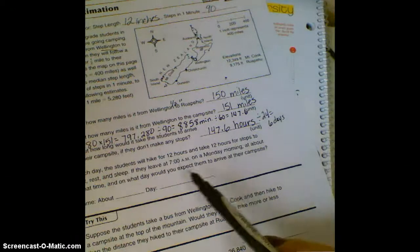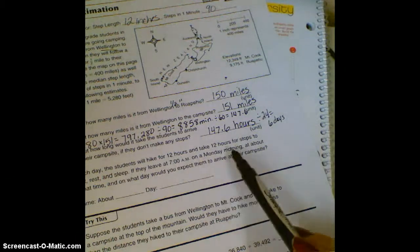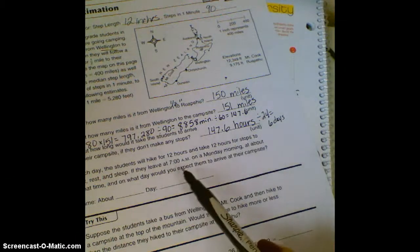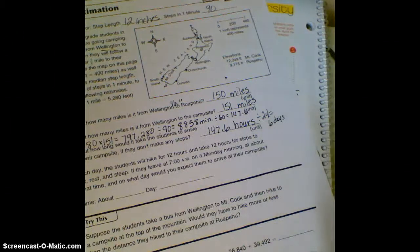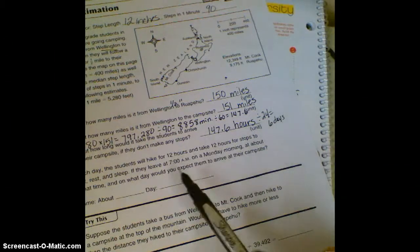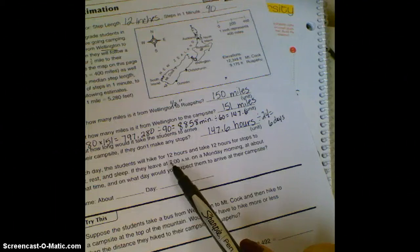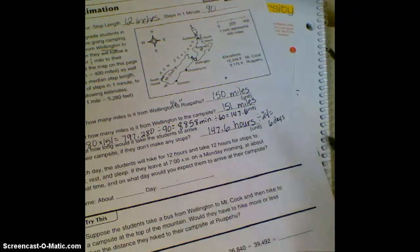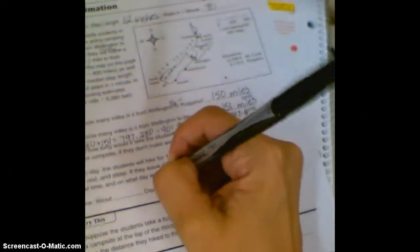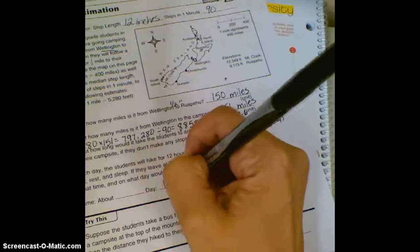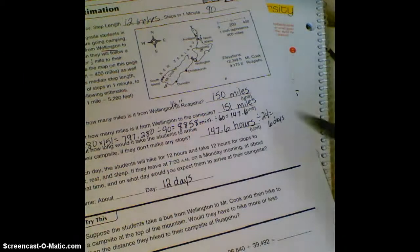It says that they will hike for 12 hours and then they will take 12 hours for stops. So thinking if it takes six days if they went 24 hours a day, what would it be if they only took 12? So we need to double that, because it's 24, so it would take about 12 days.